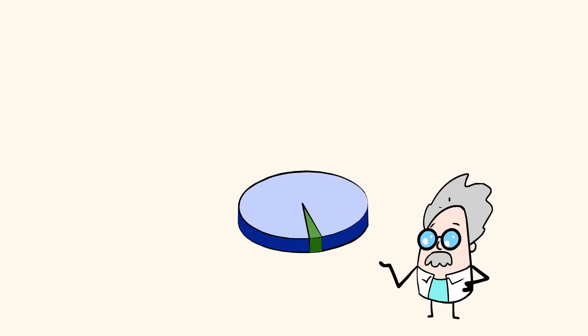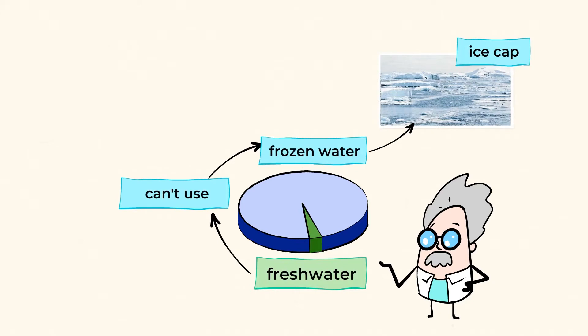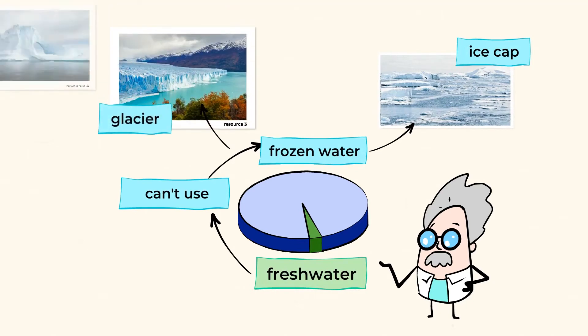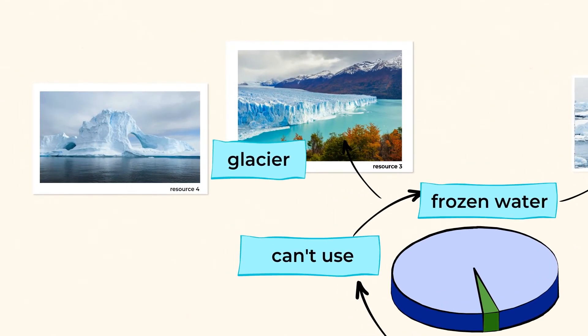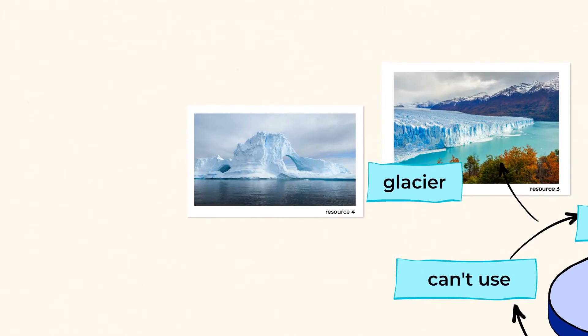And out of the small amount of fresh water on our planet, we can't even use some of that water because it's frozen in ice caps and glaciers. A glacier is a large area of thick ice that does not melt from one year to the next. They're like huge ice cubes floating in the ocean or sitting on land, except these don't melt like the ice in your lemonade.